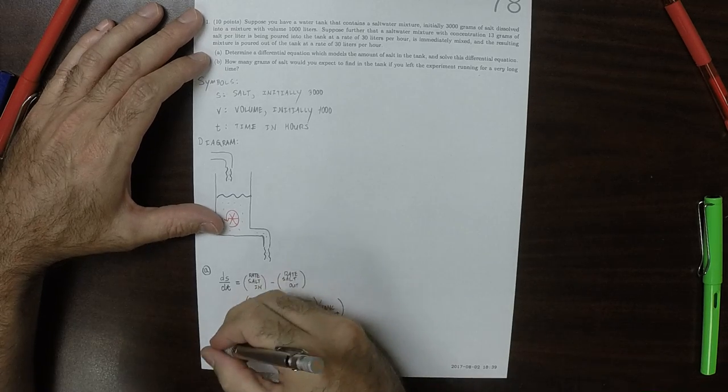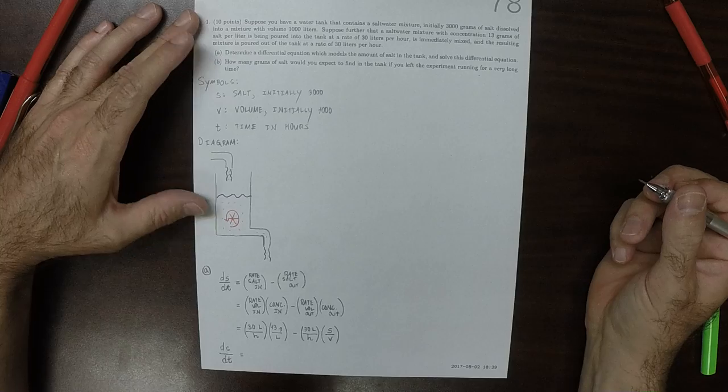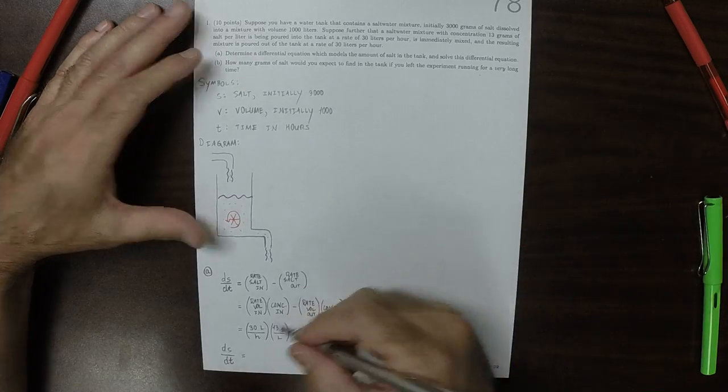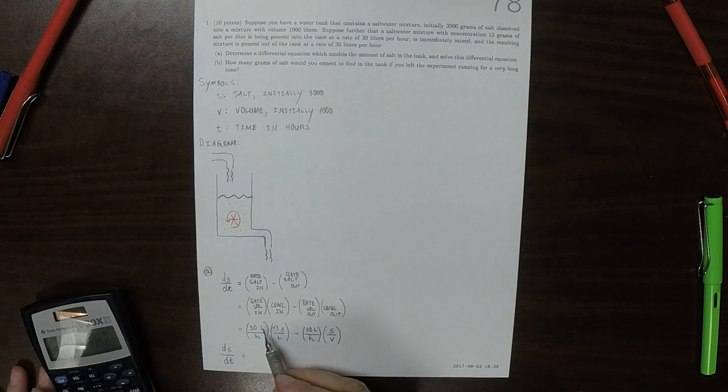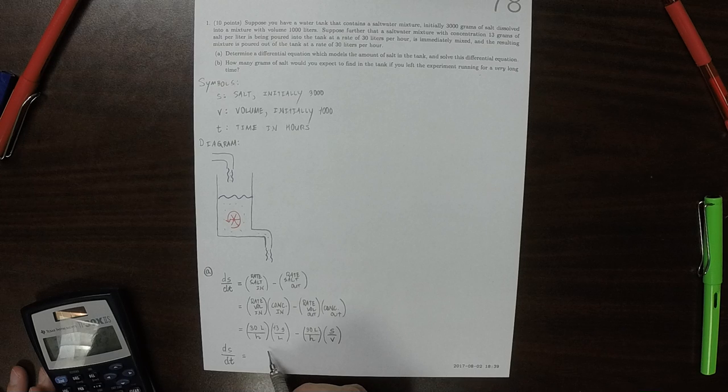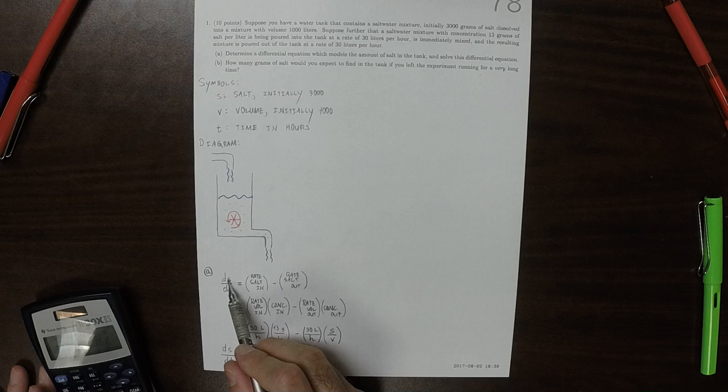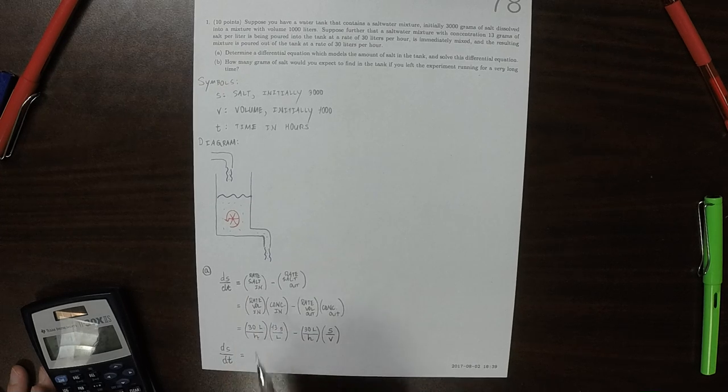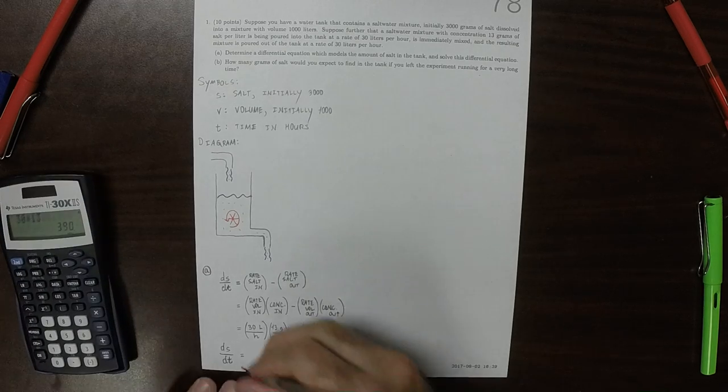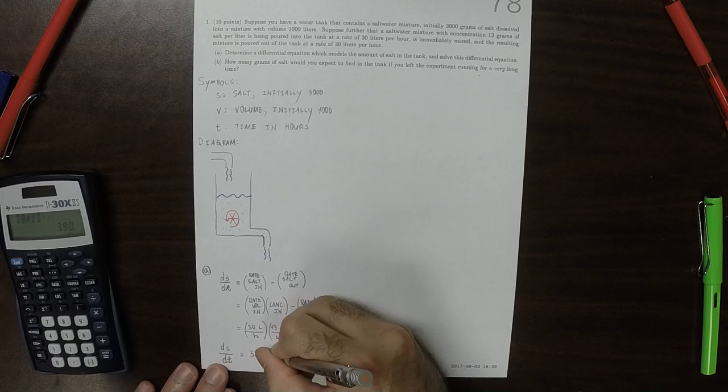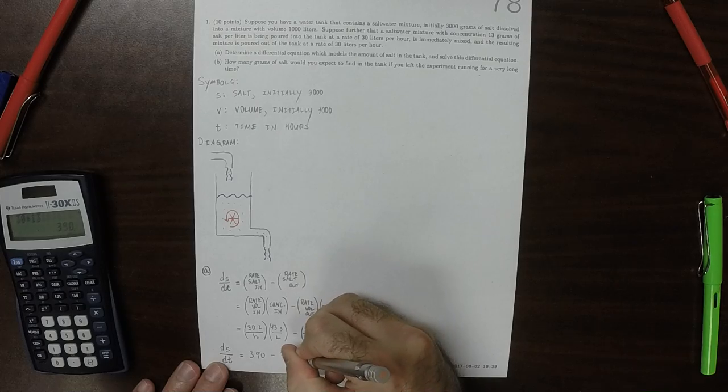So eliminating the units, dS/dT would be... So notice that when the liters cancel, then we have grams per hour. So that makes sense because we're talking about the rate of change of salt. So this is grams of salt per hour. So 30 times 13 is 390, and then minus 30 times S over V.